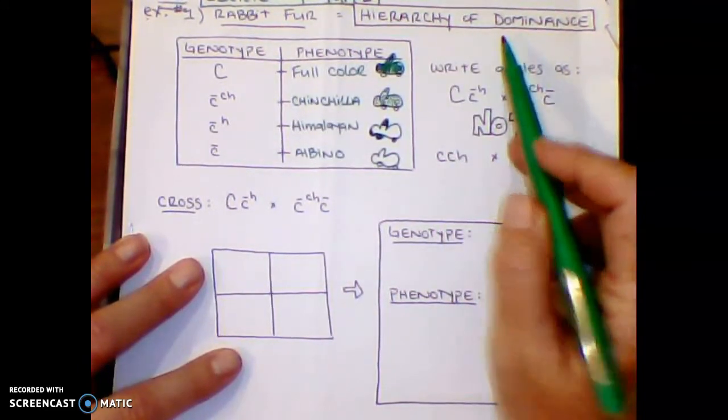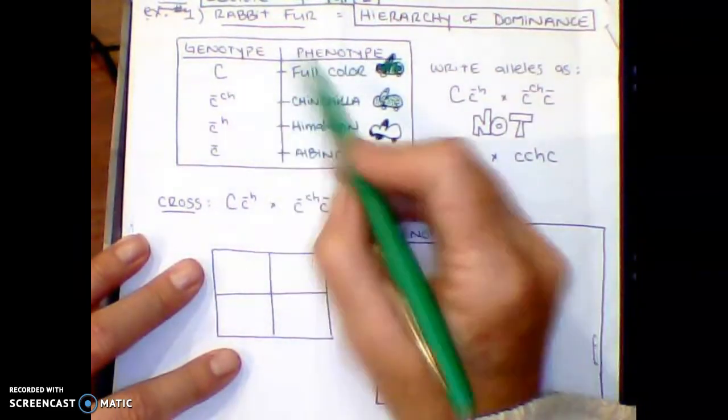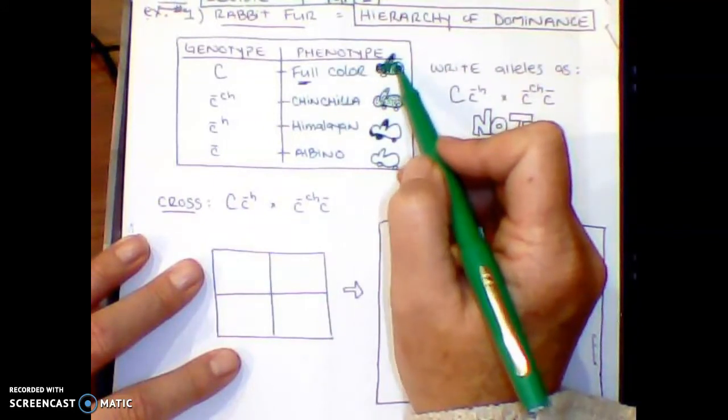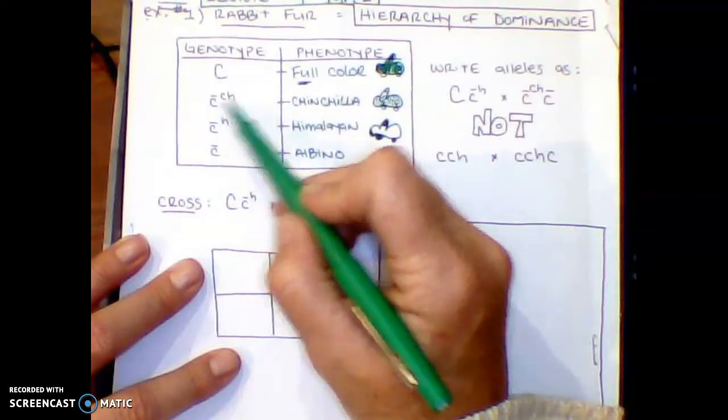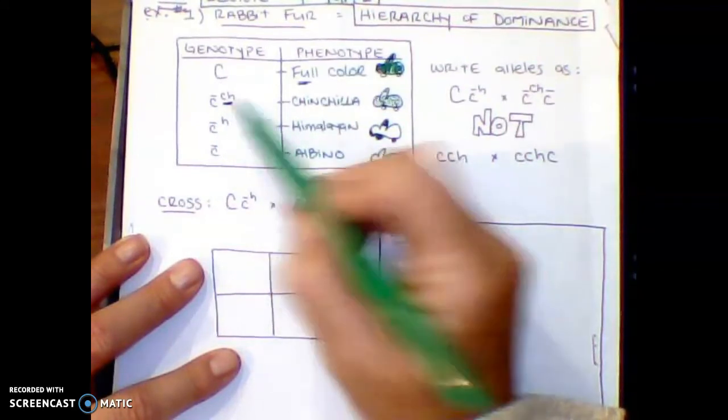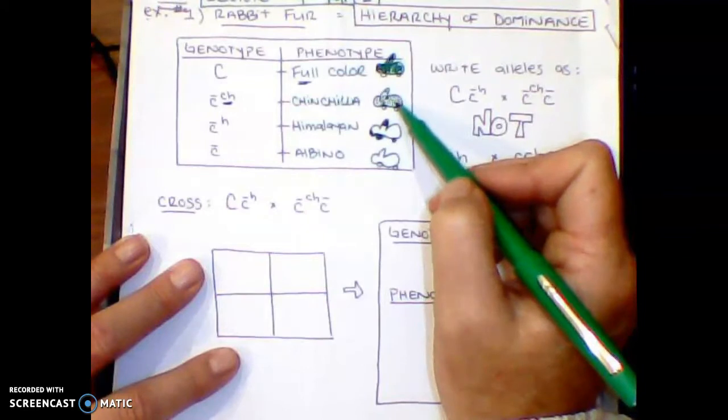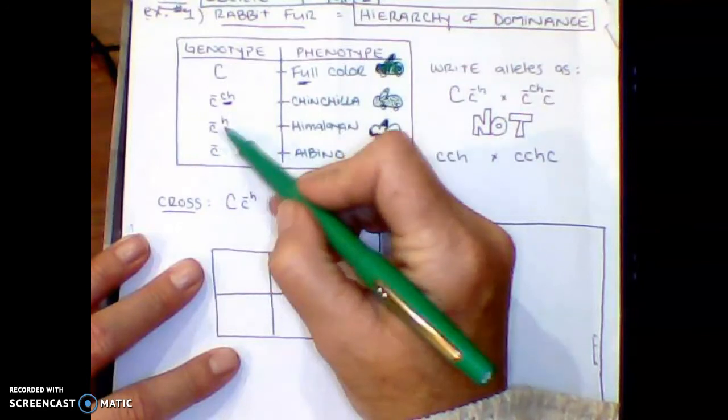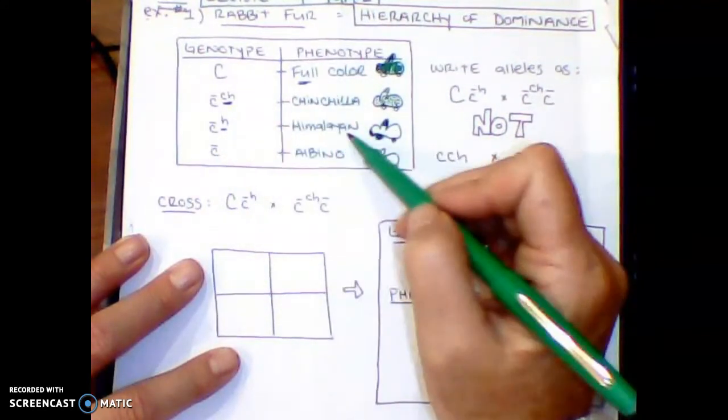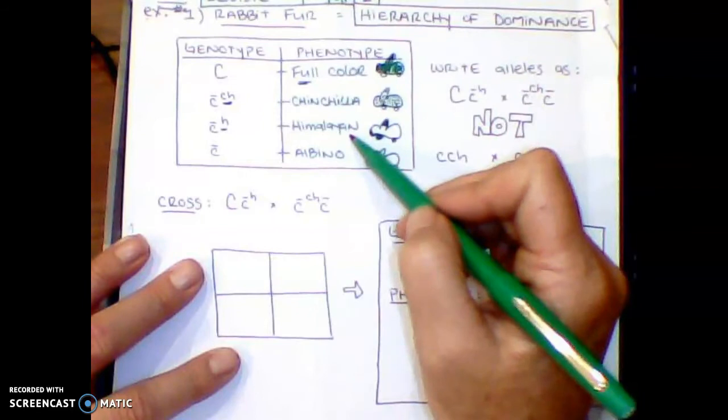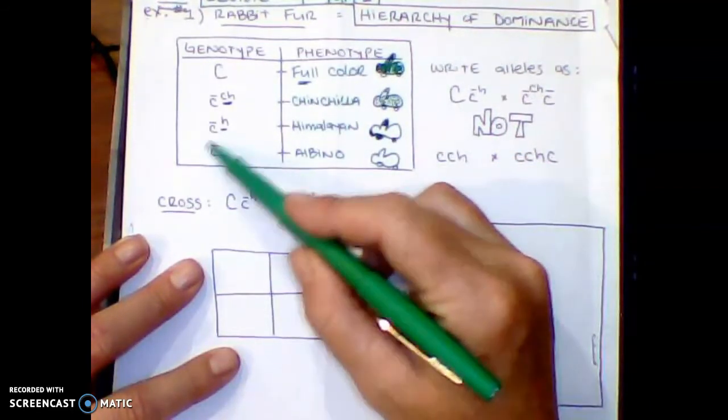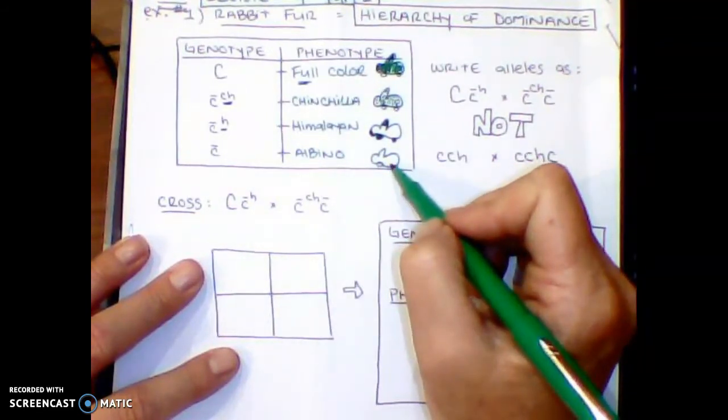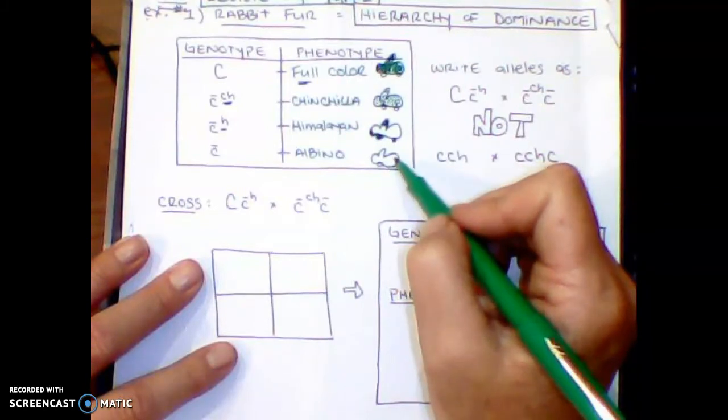So again, hierarchy of dominance. Now, if you inherit a big C, that means that your rabbit is going to be full color, so completely filled in, dark, dark brown. If we inherit a little c with now an exponent, right over here, of a CH, that means that your rabbit is kind of like a gray color. It's known as chinchilla. If we inherit a little c with an exponent of H, that means that my little rabbit is Himalayan, which is actually black and white. Or if I just inherit a little c with no exponent, then my rabbit can have a chance of becoming albino.